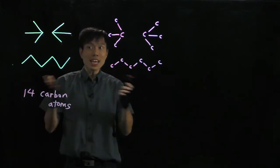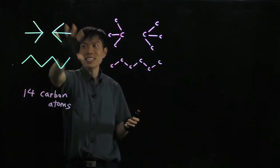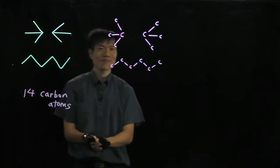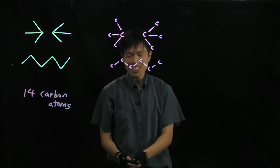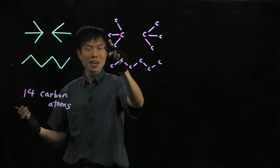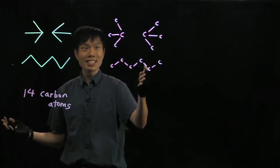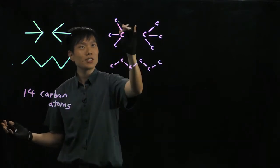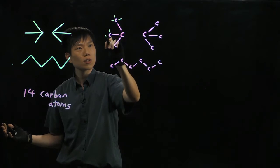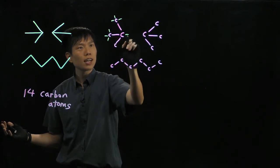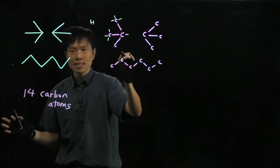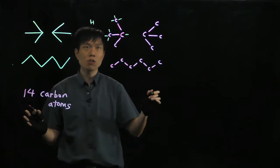Not too hard. Next, how many hydrogen atoms are present in this structure? As I've mentioned, carbon must have four lines emerging out. So for this carbon: 1, 2, 3. I'm not drawing these edges to save time, but in an exam you have to follow through.